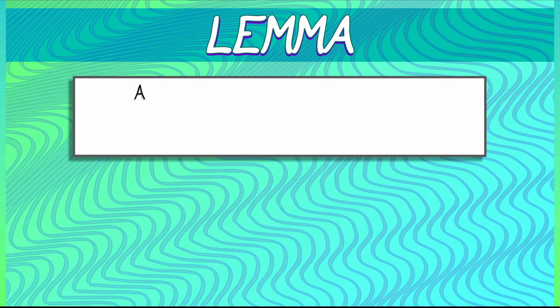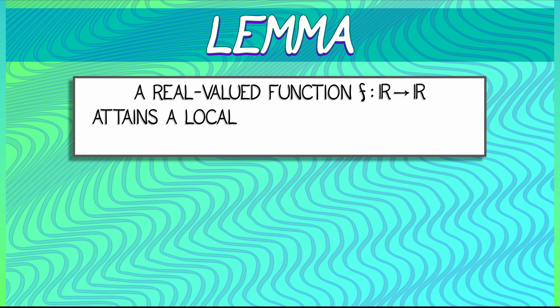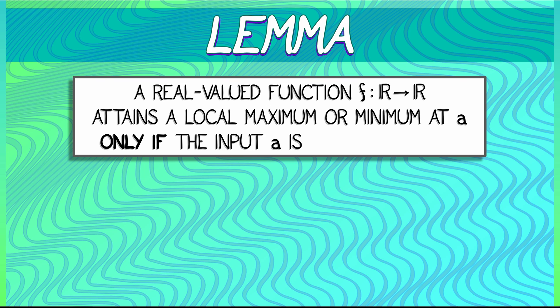If you've got a function f, one input, one output, it attains a local maximum or a local minimum at a point A only if that input A is a critical point. Now note, this says only if, not if and only if.